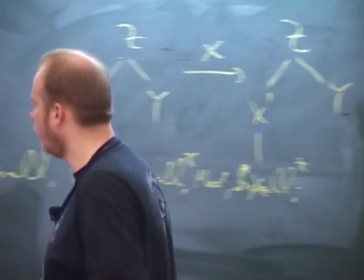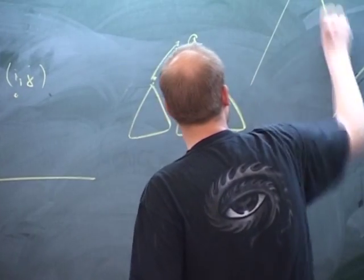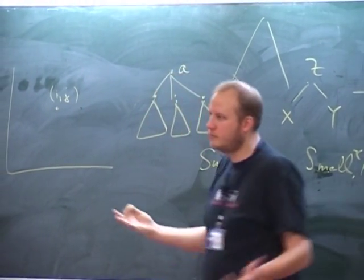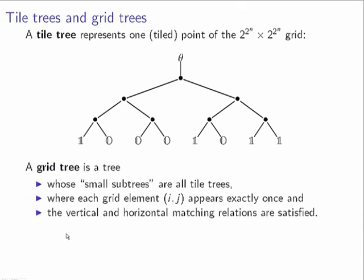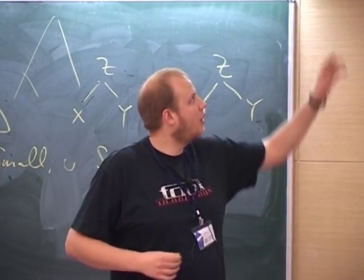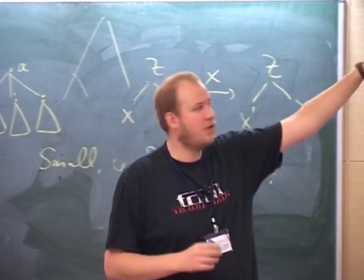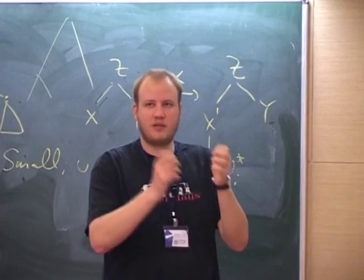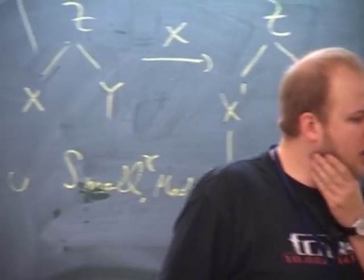We define grid trees: huge trees such that each small subtree is a tile tree, the local properties given by the tiling system hold, each grid element appears exactly once, and it satisfies the vertical and horizontal matching relations.